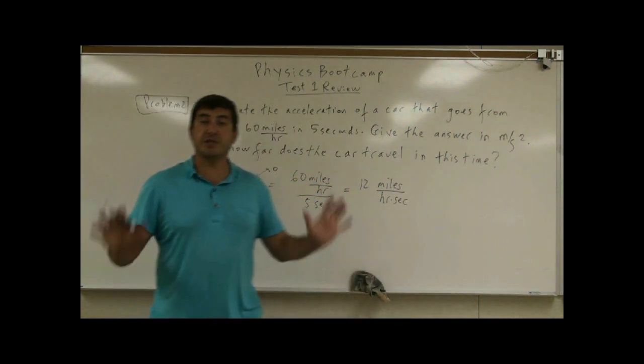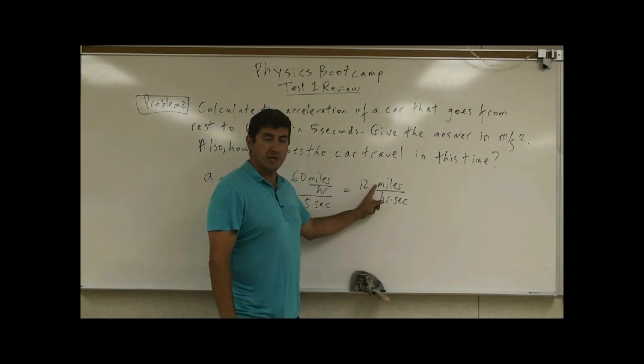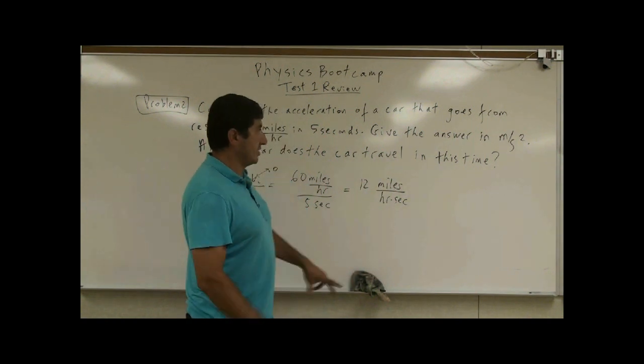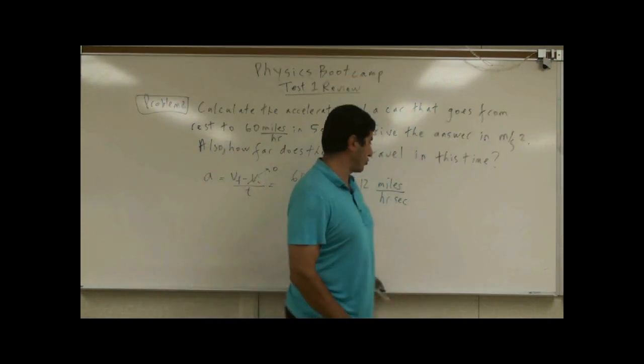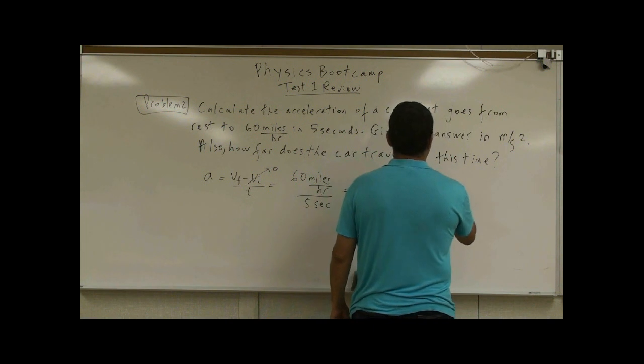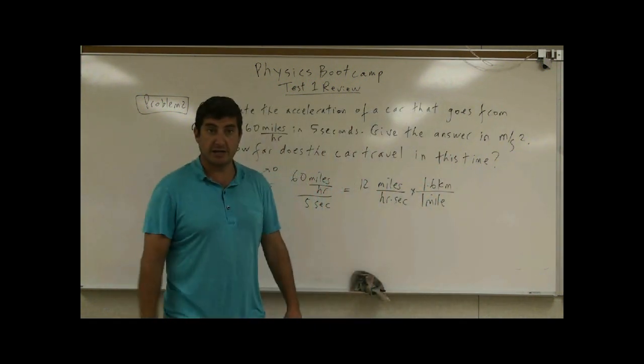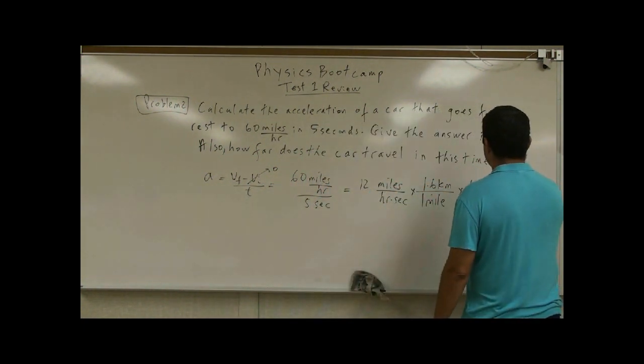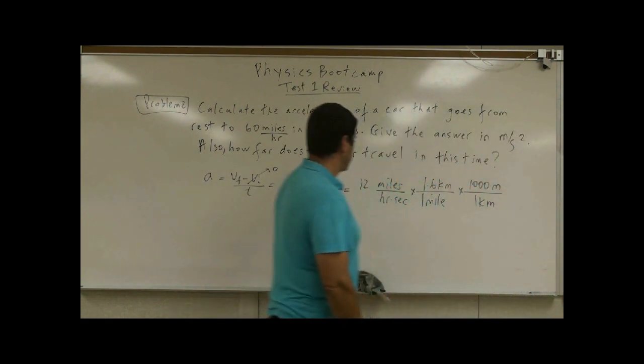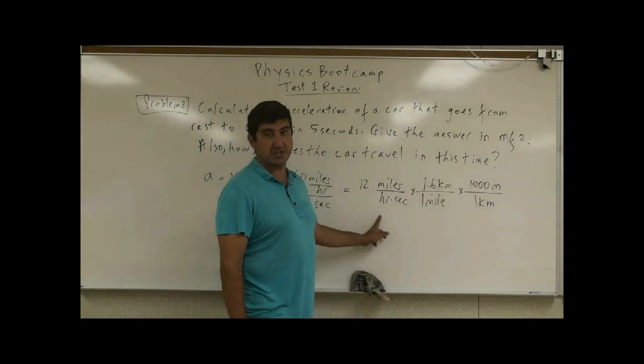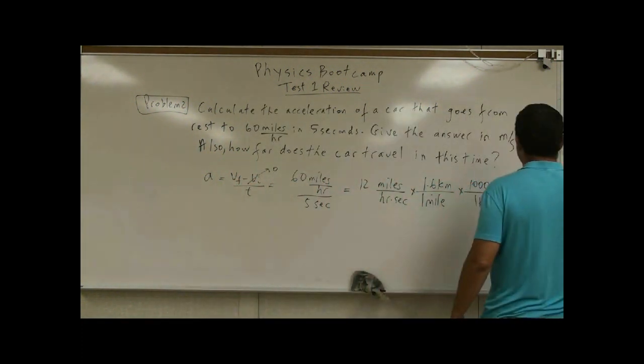This is a legitimate unit of acceleration, as long as you have a unit of distance divided by the product of two units of time. But we want to now express it in meter per second squared. So we say one mile is 1.6 kilometer. One kilometer is a thousand meter. And then one hour is 3,600 seconds.